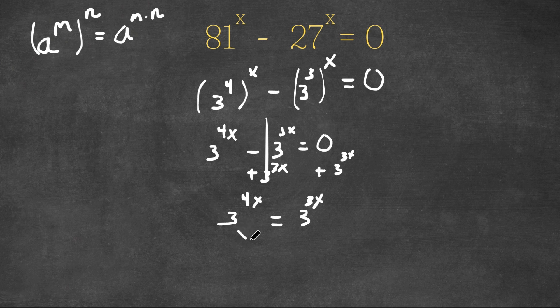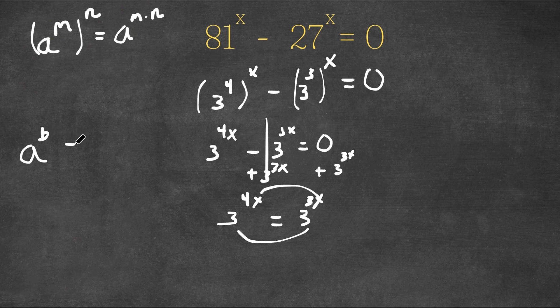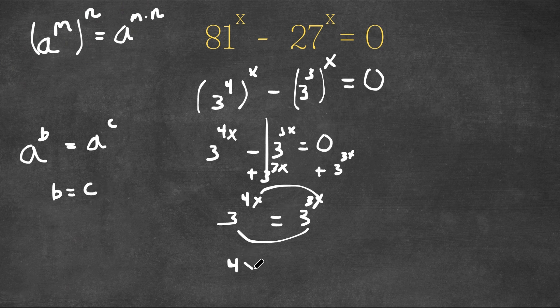Now because these two bases are the same, this also means that the exponents here are the same as well. Because if we have a to the power of b equals a to the power of c, this means that b is equal to c. Meaning 4x is equal to 3x.